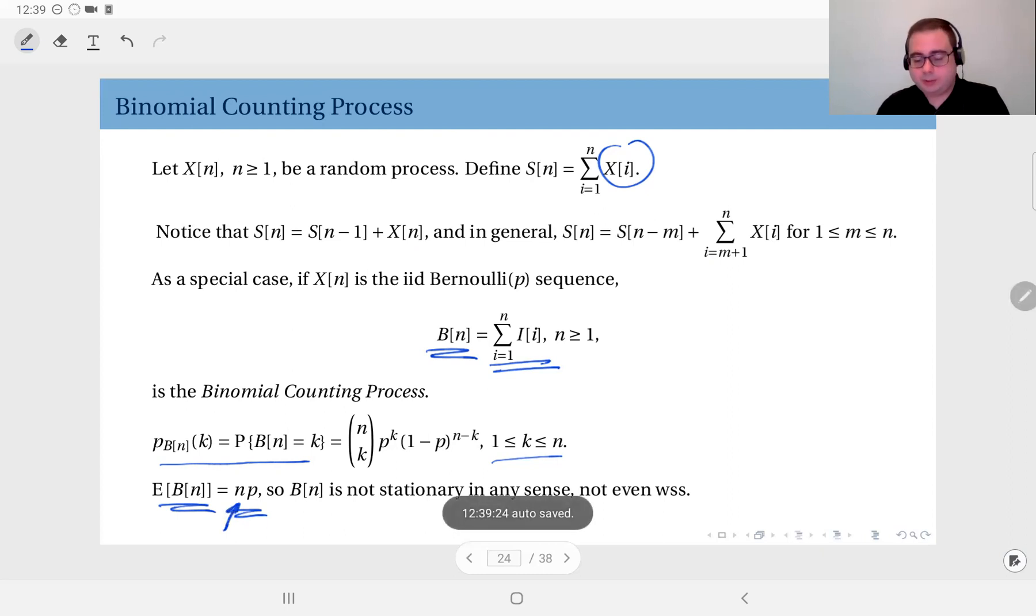So the binomial counting process is not stationary in any sense. It's not strict sense stationary. It's not wide sense stationary. It's not stationary in the mean. It's not first-order stationary. It has no stationary property because its behavior is defined through time. If you change the origin, that means you are discarding some of your binomial trials. So that will change the behavior of the binomial counting process. So it is dependent on where the origin is placed. Therefore, it's not stationary in any sense.